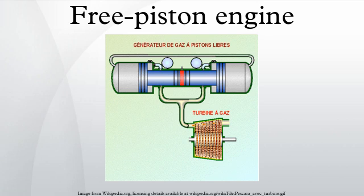A two-cylinder FPEG is inherently balanced, and Toyota demonstrated a 24-inch long by 2.5-inch diameter unit that outputs up to 15 horsepower.